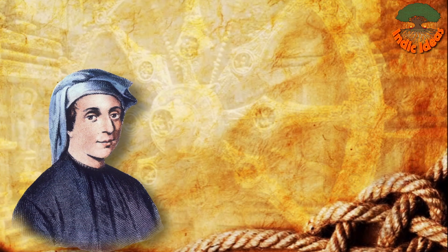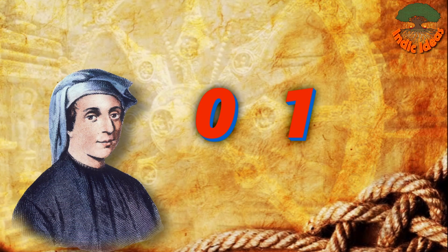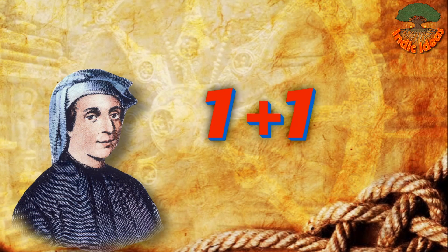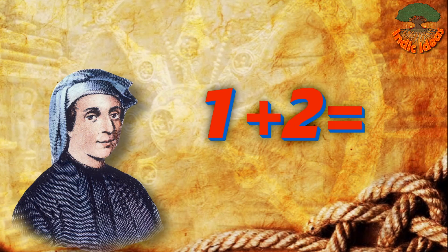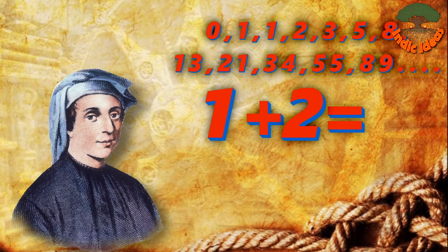Fibonacci numbers are a never-ending sequence starting with 0 and 1, continuing by adding the previous two numbers. The next numbers in the Fibonacci sequence, for instance, are 1, 2, 3, and 5.